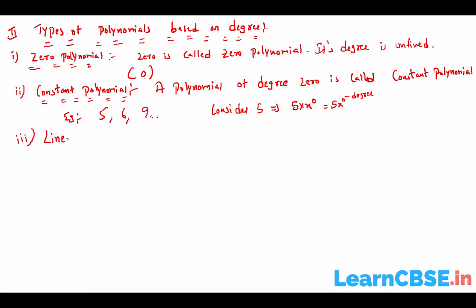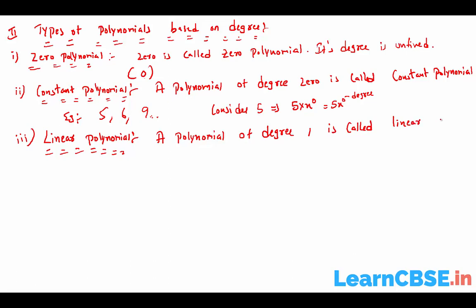Next is linear polynomial. A polynomial of degree 1 is called a linear polynomial. For example: 6x, 7x + 5, 3x + 7. All of these are linear because the highest power in each expression is 1. So the degree is 1, and these are all called linear polynomials.